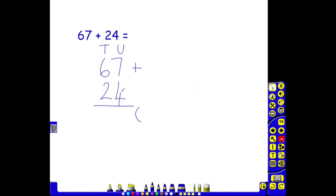I've got 7 units, add 4 units. 7 add 4. I then want to think about adding my 10s, and again I'm going to do this and record it in brackets. I've got 6 tens, which is 60, and I want to add that to 2 tens, which is 20.